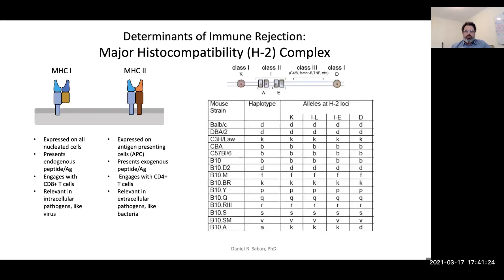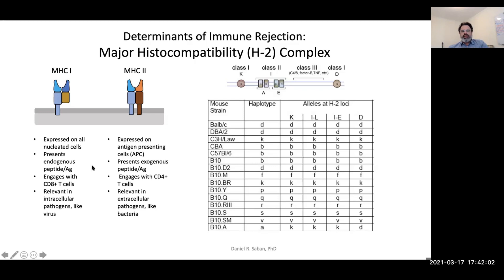The first point is to understand the major histocompatibility complex as a major determinant of immune rejection. The MHC is important for antigen presentation to T cells. Because these genes have one of the highest amounts of polymorphisms, this is the reason for the immunogenic nature in the transplantation setting.